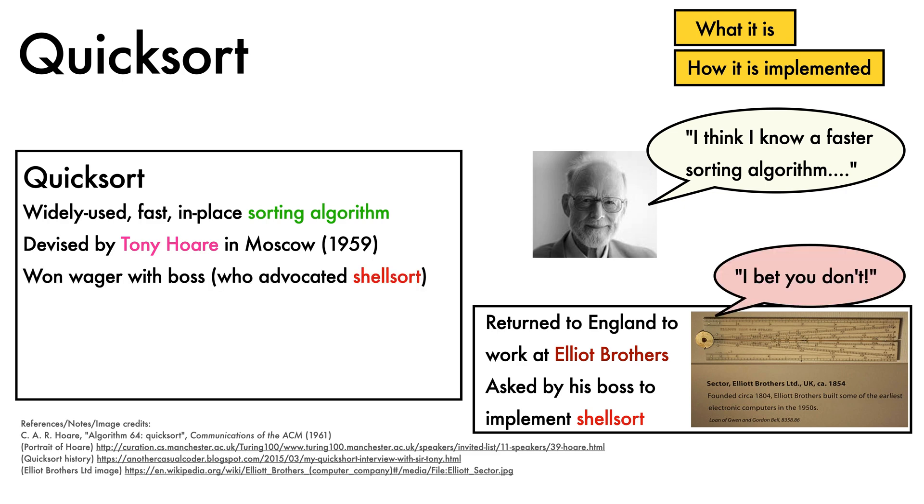Ultimately, his boss conceded that Hoare's Quicksort was faster, at least on the kind of data they tested on, leading Hoare to win the bet.